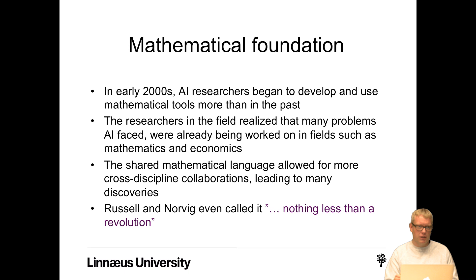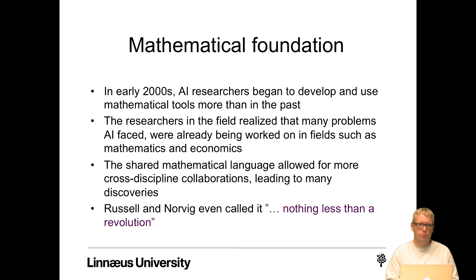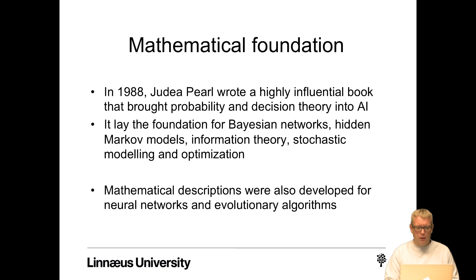In the early 2000s, AI researchers began to develop and use mathematical tools more than in the past. They realized many problems AI faced were already being worked on in fields such as mathematics and economics. The shared mathematical language allowed for more cross-discipline collaboration leading to many discoveries — Russell and Norvig even called it nothing less than a revolution. In 1988, Judea Pearl wrote a highly influential book bringing probability and decision theory into AI, laying the foundation for Bayesian networks, hidden Markov models, information theory, stochastic modeling, and optimization. Mathematical descriptions were also developed for neural networks and evolutionary algorithms.